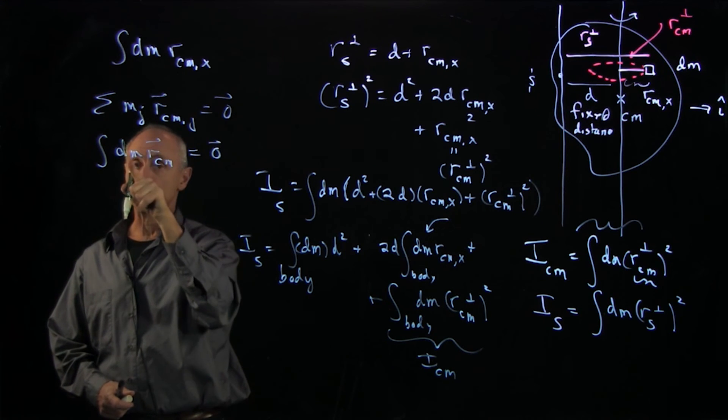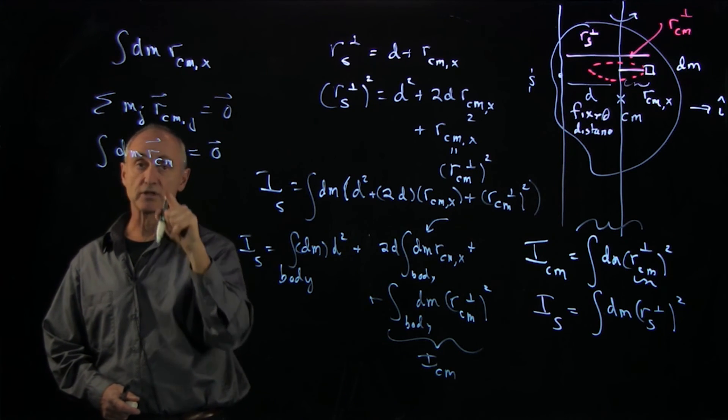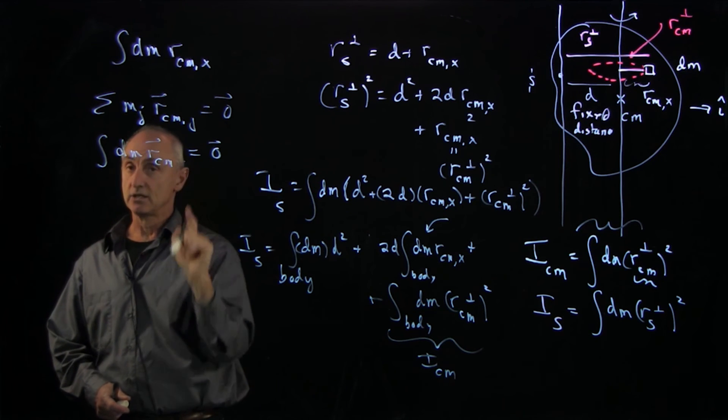So when you sum up the position of every object with respect to the vector from the center of mass to your dm element, it's 0.